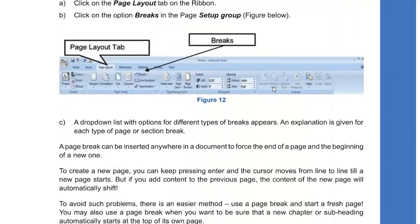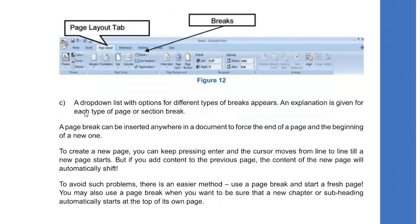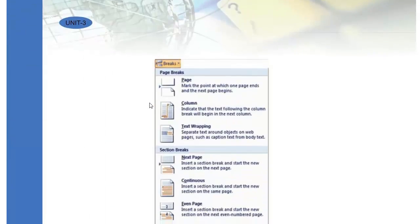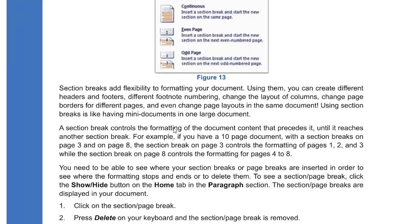For example, if you are creating a textbook with different sections for digital literacy, word processing, spreadsheet, and so on, you can use page breaks and section breaks. To do this, click on the Page Layout tab in your ribbon, then click on Break in the Page Setup group. A drop-down list with options for different types of breaks will appear with explanations. Select any of them and use it in your document.